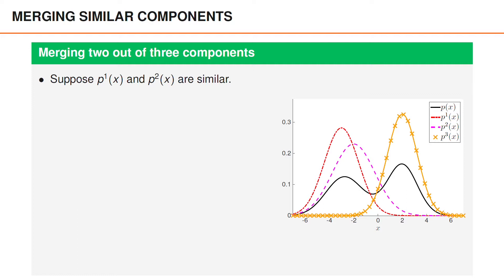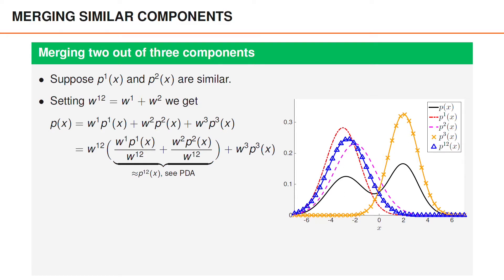But there is a nice trick that enables us to do this. The density that we are looking at is w^1 p^1 plus w^2 p^2 plus w^3 p^3, where we would like to replace the first two components with one. To do this, it is helpful to introduce a notation w^12 for the total weight of the first two components. Here's the trick. We can now rank the first two terms as w^12 times the two terms divided by w^12. Inside the parentheses, p^1 then has a weight w^1 divided by w^12, and p^2 has a weight w^2 divided by w^12. Since these two weights sum to one, we actually have a density inside the parentheses.